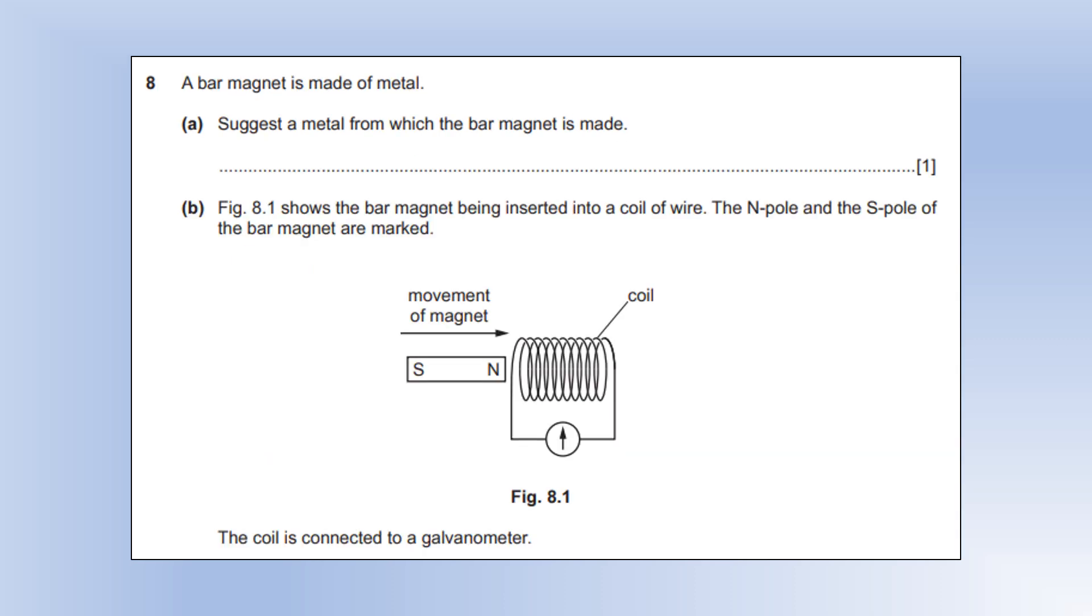A bar magnet is made of metal. Suggest a metal from which the bar magnet is made. So, it's a magnet, so it needs to be a hard magnetic material, so I'm going to go with steel.